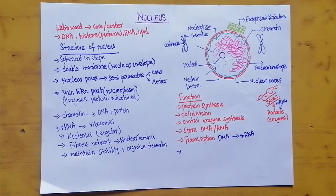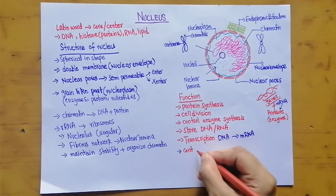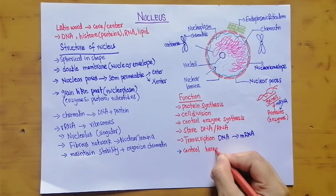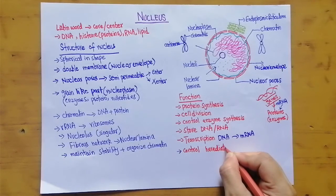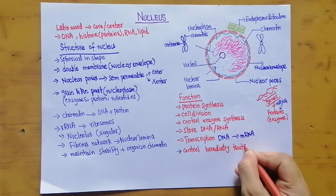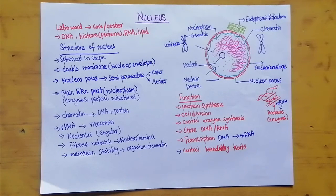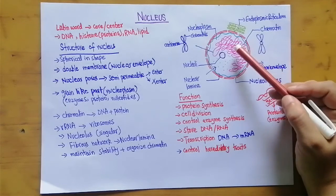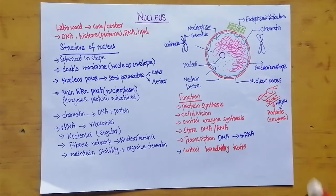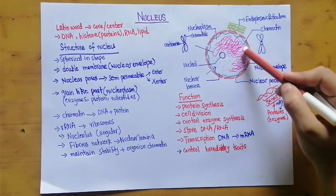The last function of the nucleus is that it controls hereditary traits. For example, whether a person has black or brown hair, or blue or brown eyes — all this information is controlled by the nucleus because it contains DNA, and all the information is stored inside the DNA.